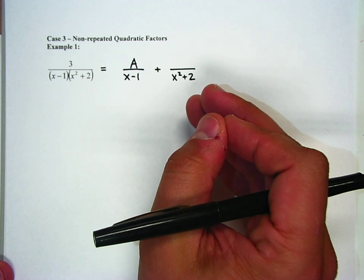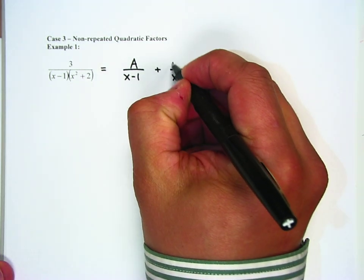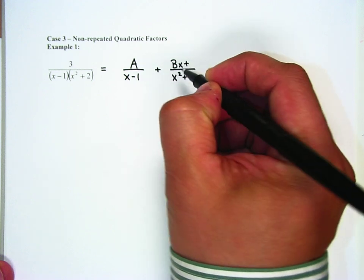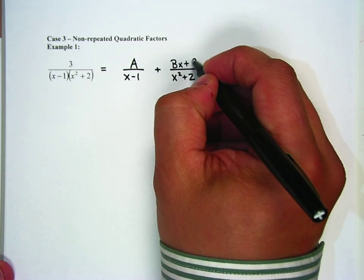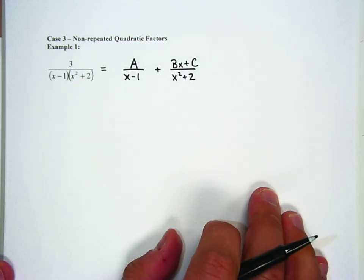But the second factor is x squared plus 2, which is a quadratic. Now because it's a quadratic on the bottom, we want to put a linear on top. And so linear is like mx plus b, ax plus b. In this case, we've already used A, so we're going to do Bx plus C.